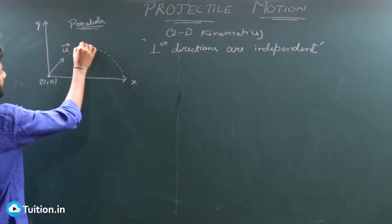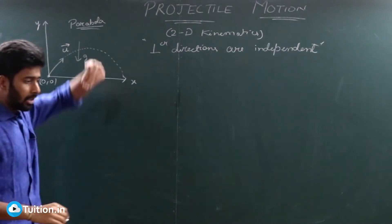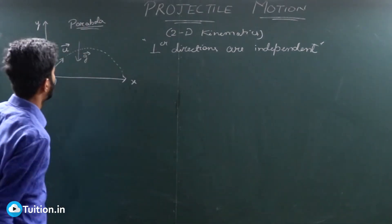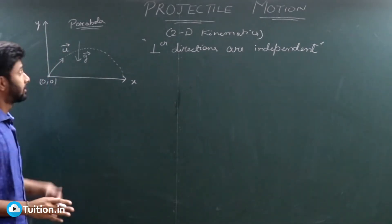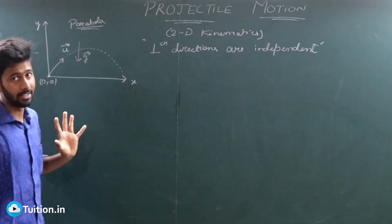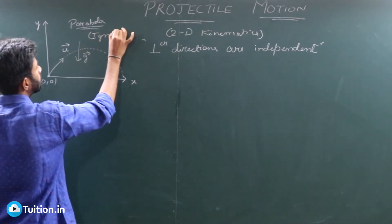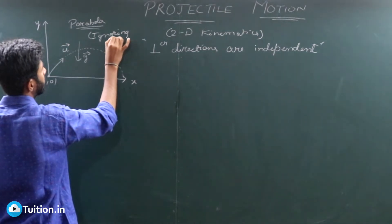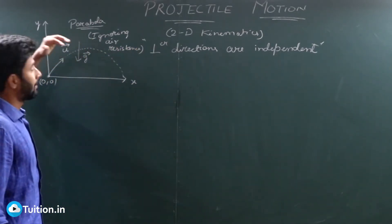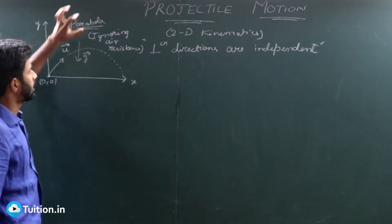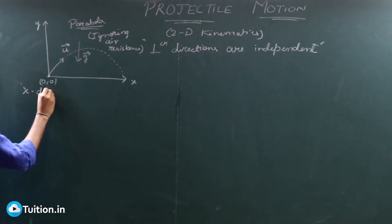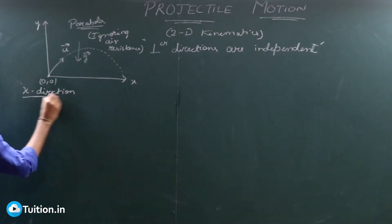What you already know is there is gravity acting downwards. Gravity is a form of acceleration in the downward direction — that is g — and it is present throughout the vertical space. There is nothing present in the horizontal space. In real life we have air resistance, but we are ignoring air resistance in this particular case. Gravity is the only external force we are taking into consideration for this projectile motion.